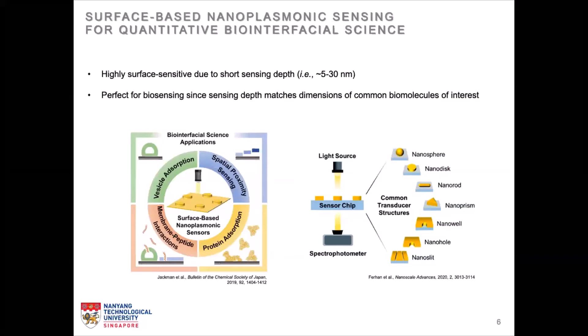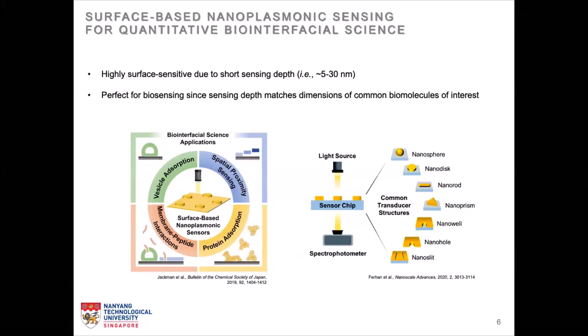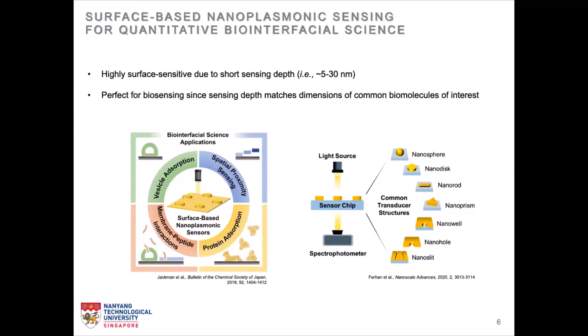What makes surface-based nanoplasmonic platforms perfect for bio-interfacial science is that they are highly surface sensitive, with an effective penetration or sensing depth of around 5 to 30 nanometers. This closely matches the dimensions of common biological entities — for example, the thickness of a lipid bilayer or lipid membrane is around 5 nanometers, and proteins such as BSA and IgG have dimensions in the range of 10 to 20 nanometers. This means that subtle changes to their conformation can be detected with great precision and high spatiotemporal resolution, since the conformational changes will occur within the effective sensing depth — the region where electromagnetic field enhancement is highest.